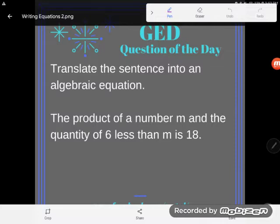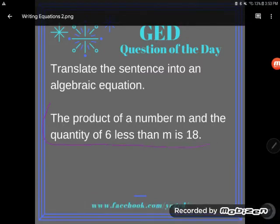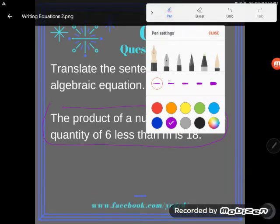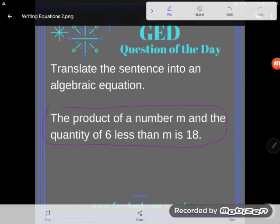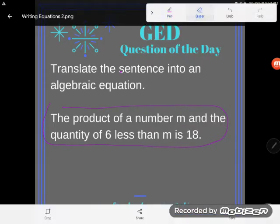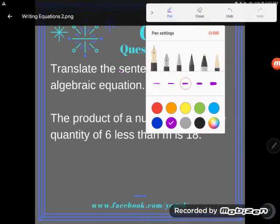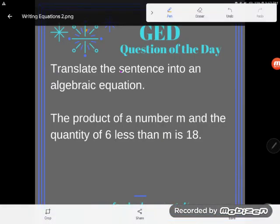They're asking us to take a sentence that's written here in English and translate it into an algebraic equation, basically into the language of algebra, the language of symbols and signs. This particular example is not too challenging because it's not like a scenario word problem. It's using math words, so it should be relatively simple to put it into math terms. But there's an important word in it that if you don't know it, you're going to be confused.